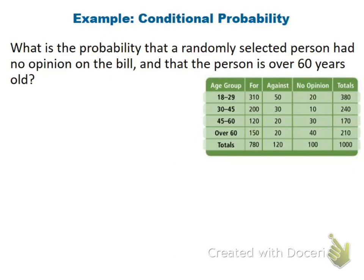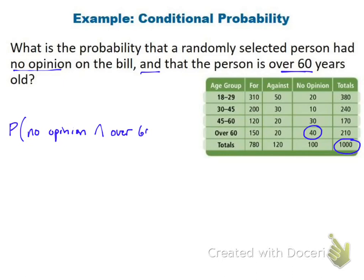With the same table, find the probability that someone had no opinion and is over 60. This uses 'and,' not conditional, so there's no first or second — we put it over the total. The 40 people who are over 60 with no opinion go over the grand total of 1,000, giving 40 over 1,000, which reduces to 2 over 50, or 4%.